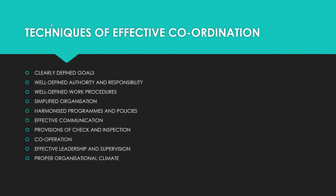Sixth point: effective communication — coordination requires an effective system of communication, which is the key to proper coordination. Policy decisions and programs must be conveyed at all levels; modern means of communication become essential, and personal contacts should be encouraged. Seventh point: provisions for check and inspection — to achieve coordination, there should be provisions for checking and inspection so that we can know what is happening in the organization and correct factors which create coordination problems.